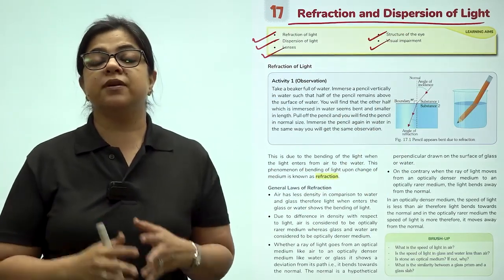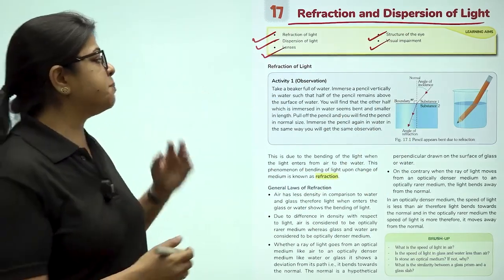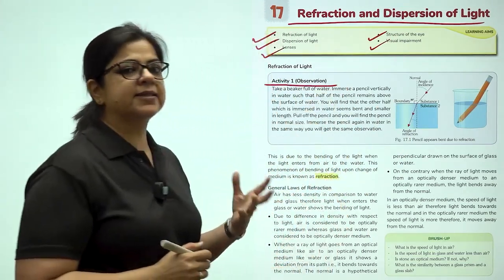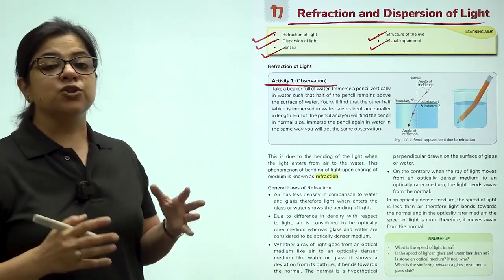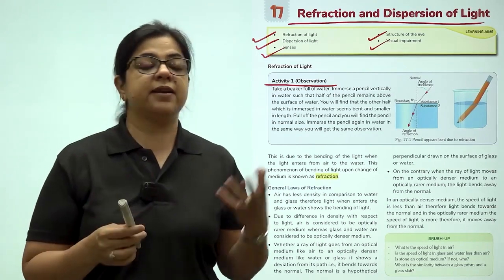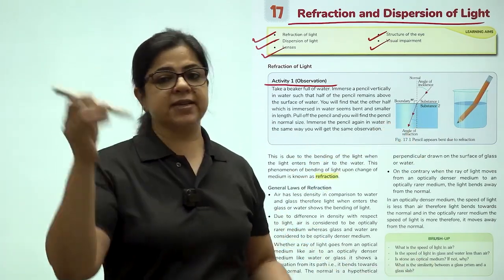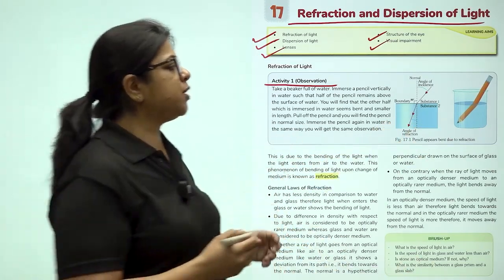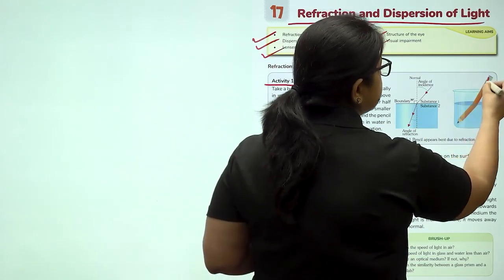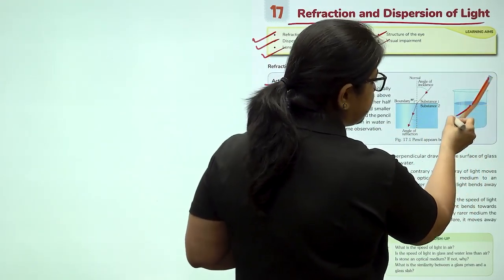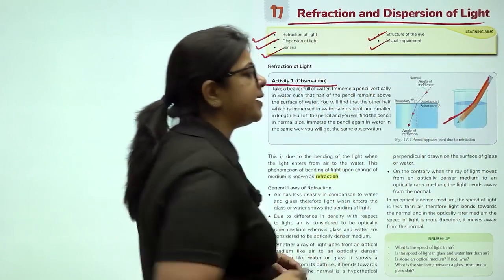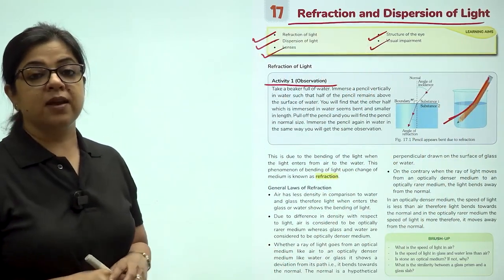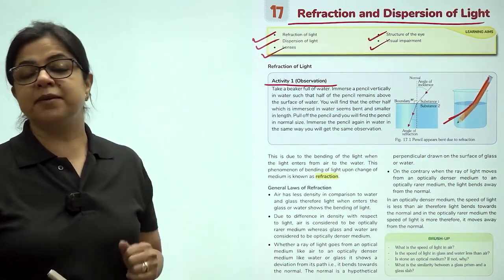Beginning the chapter, we will understand a simple experiment which we may have played as a game many a times. If you take a pencil and a beaker and you immerse it, what do you see? If you look at the beaker from the top, you will see that the pencil appears to be bending inside water. Why is this bending taking place?